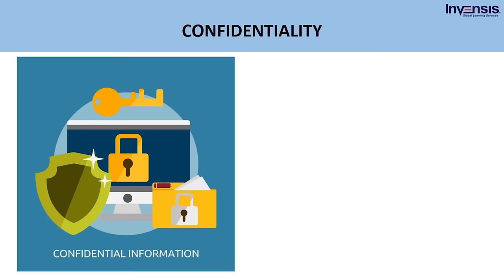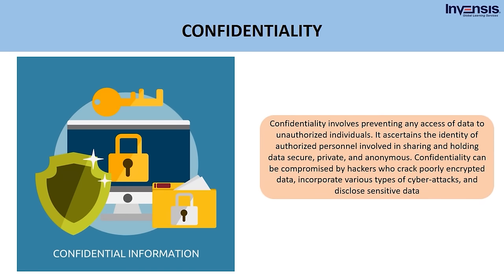The first component is confidentiality. Confidentiality involves preventing any access of data to unauthorized individuals. It ascertains the identity of authorized personnel involved in sharing and holding data secure, private, and anonymous. Confidentiality can be compromised by hackers who crack poorly encrypted data, incorporate various types of cyber attacks, and disclose sensitive data. This is very important in the context of information security.